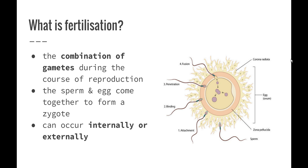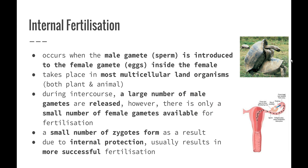Fertilization can occur internally or externally. Organisms that live on land face the problem of sex cells and the developing zygote drying out. So most multicellular land organisms have the female sex cell fertilized inside the female organism. This occurs when the male gamete, being the sperm, is introduced to the egg inside the female. It takes place in most multicellular land organisms, being both plants and animals.